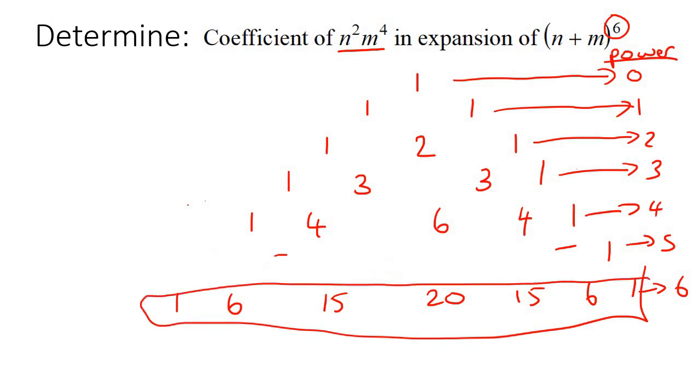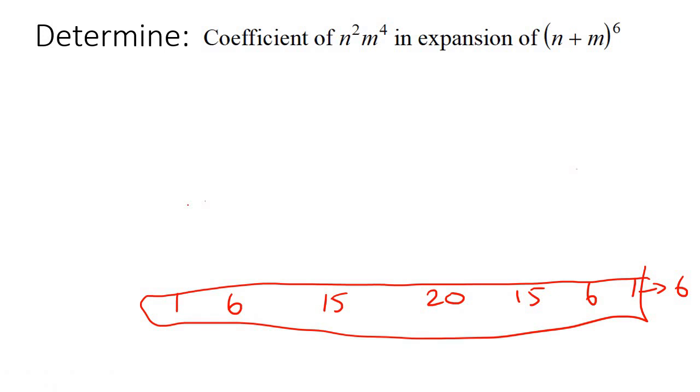Let's ignore everything else. We take these numbers: 1, 6, 15, 20, 15, 6, 1. Then we take n and m and put them in brackets for every term. For the first variable, we put power 6 and count down: 6, 5, 4, 3, 2, 1, 0. For the other variable, we count up from 0: 0, 1, 2, 3, 4, 5, 6.